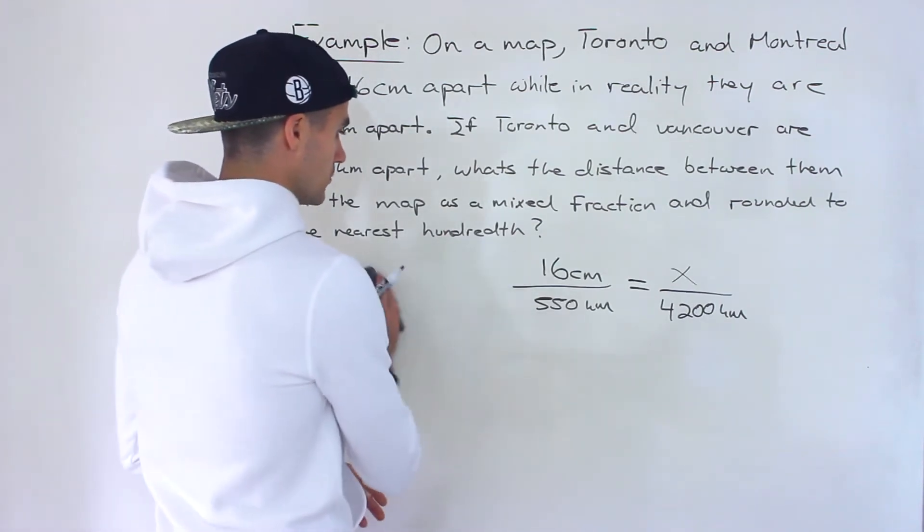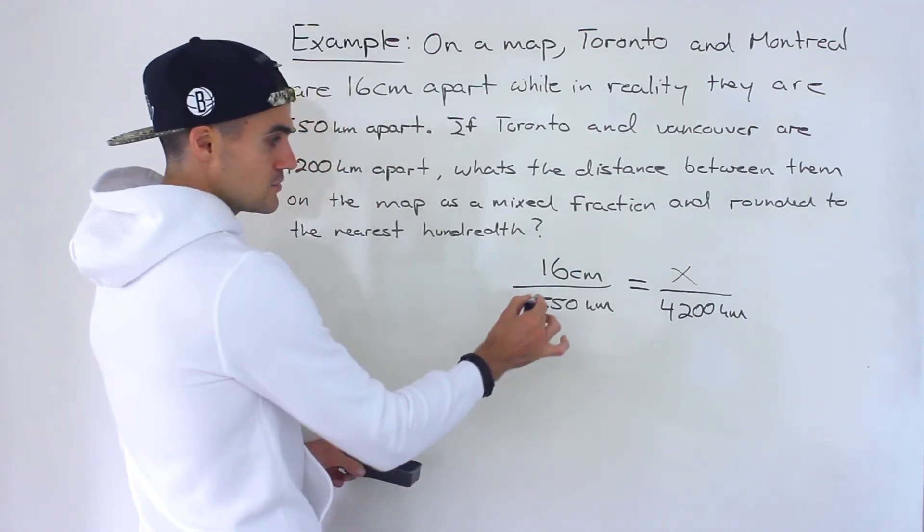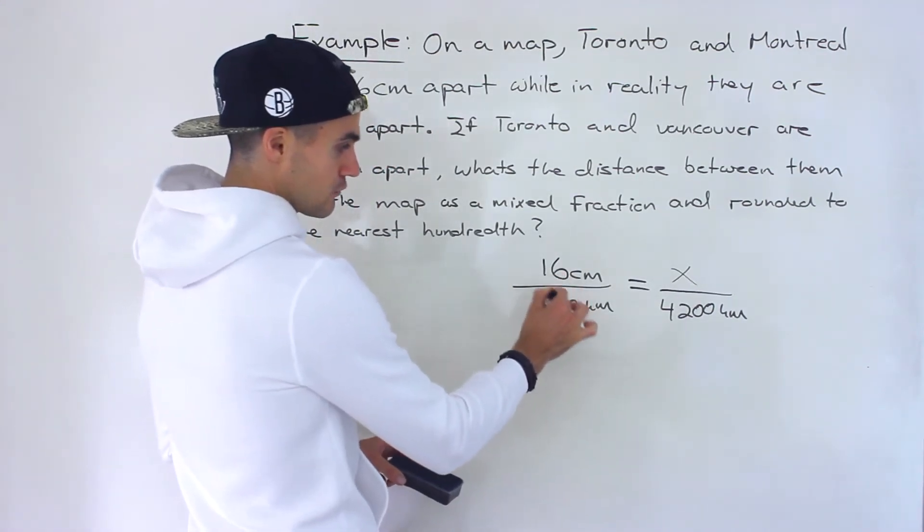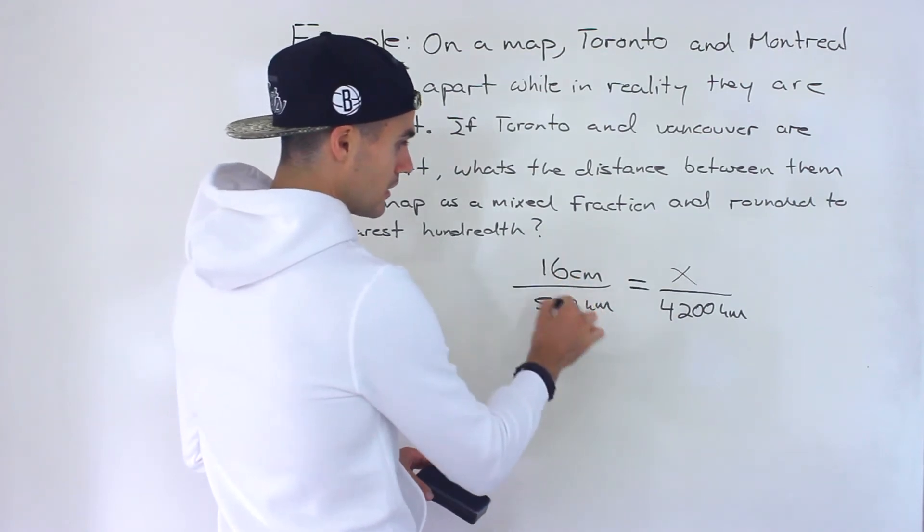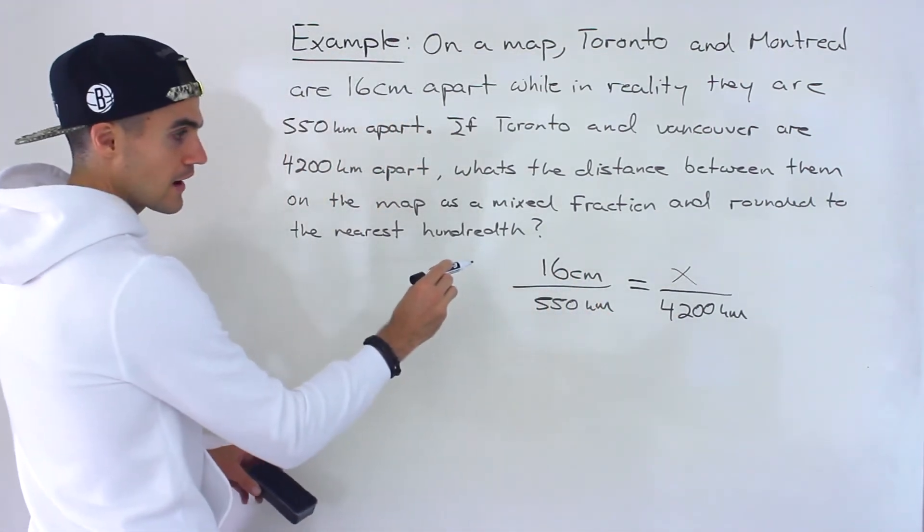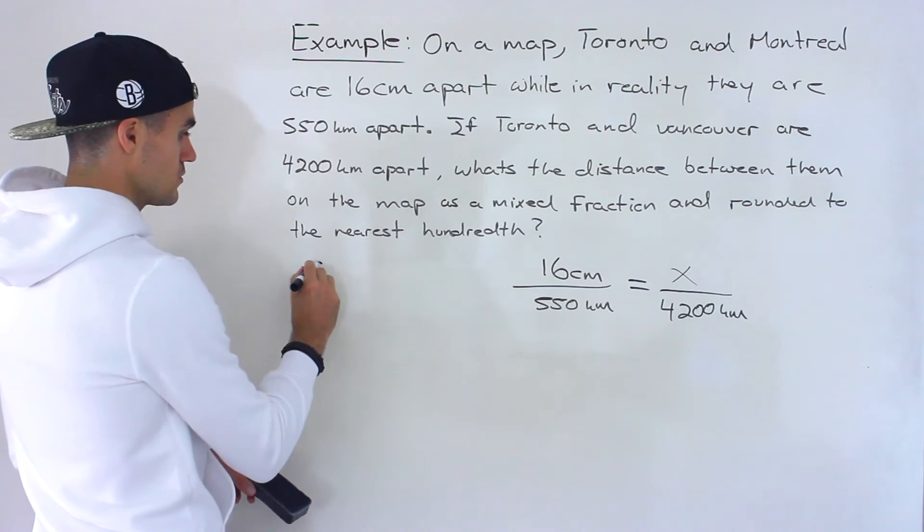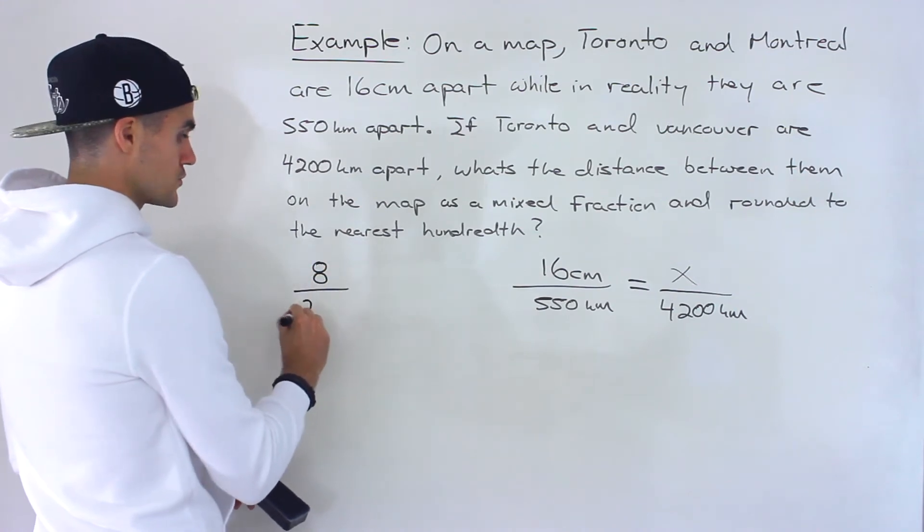And actually before cross multiplying you don't necessarily have to do this step but over here 16 over 550 you could actually simplify this fraction. So if we divide the numerator and denominator by 2 we would end up with 8 over 275.